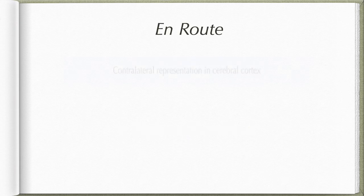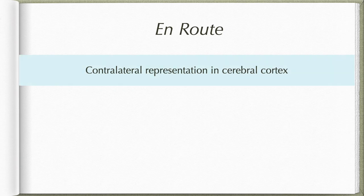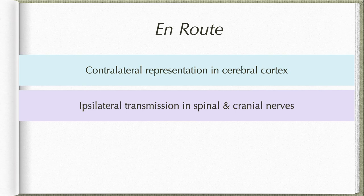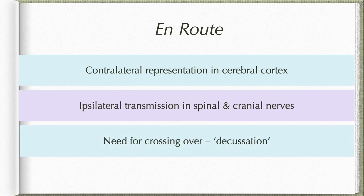The cerebral cortex has predominantly contralateral representation, whereas the spinal and cranial nerves carry ipsilateral information. Similar to ascending fibers, the descending tract fibers also need to cross over to the opposite side. This crossing over is generally referred to as decussation.